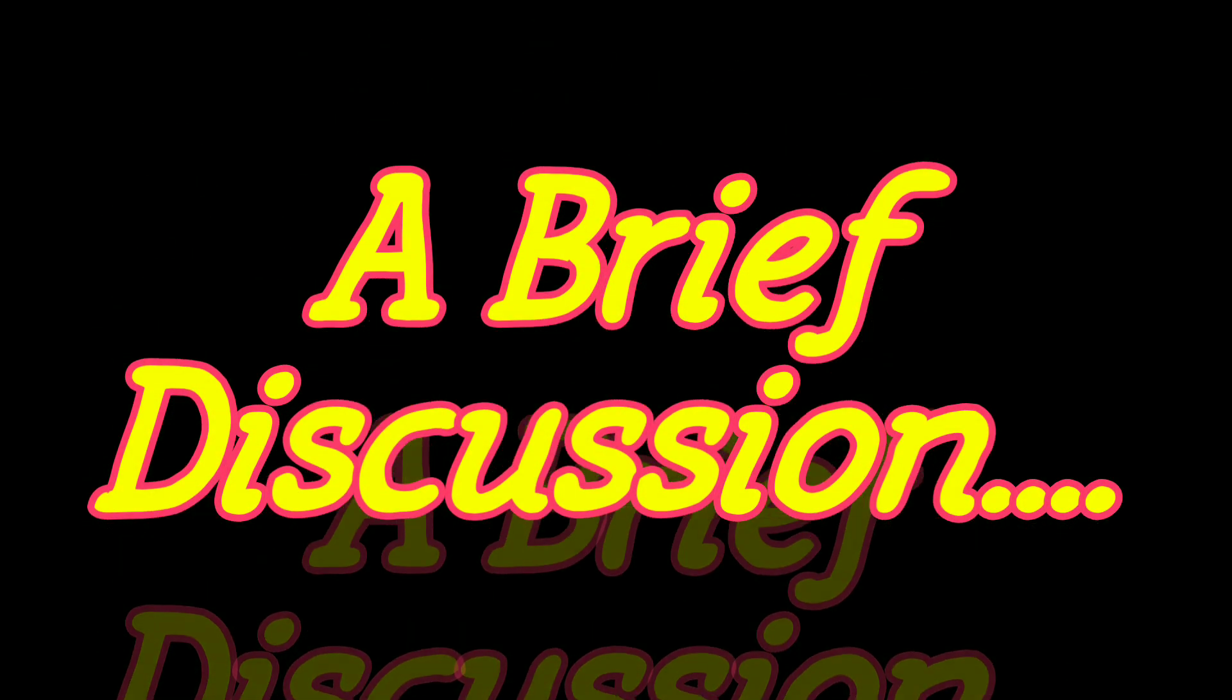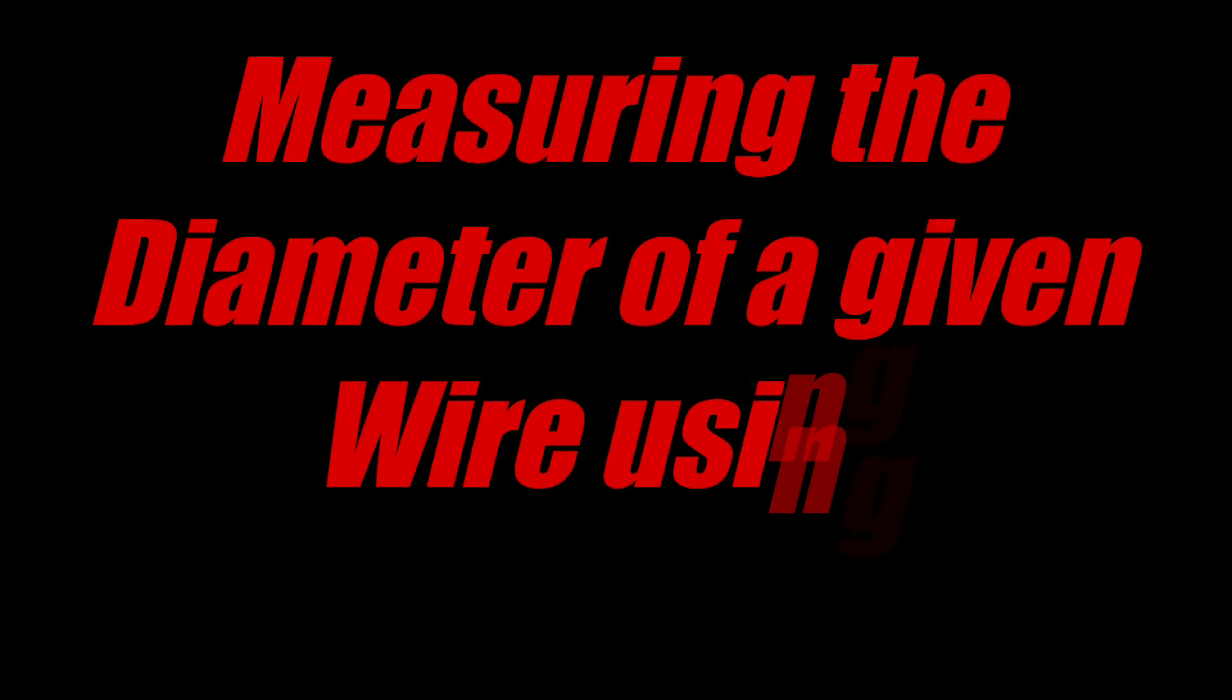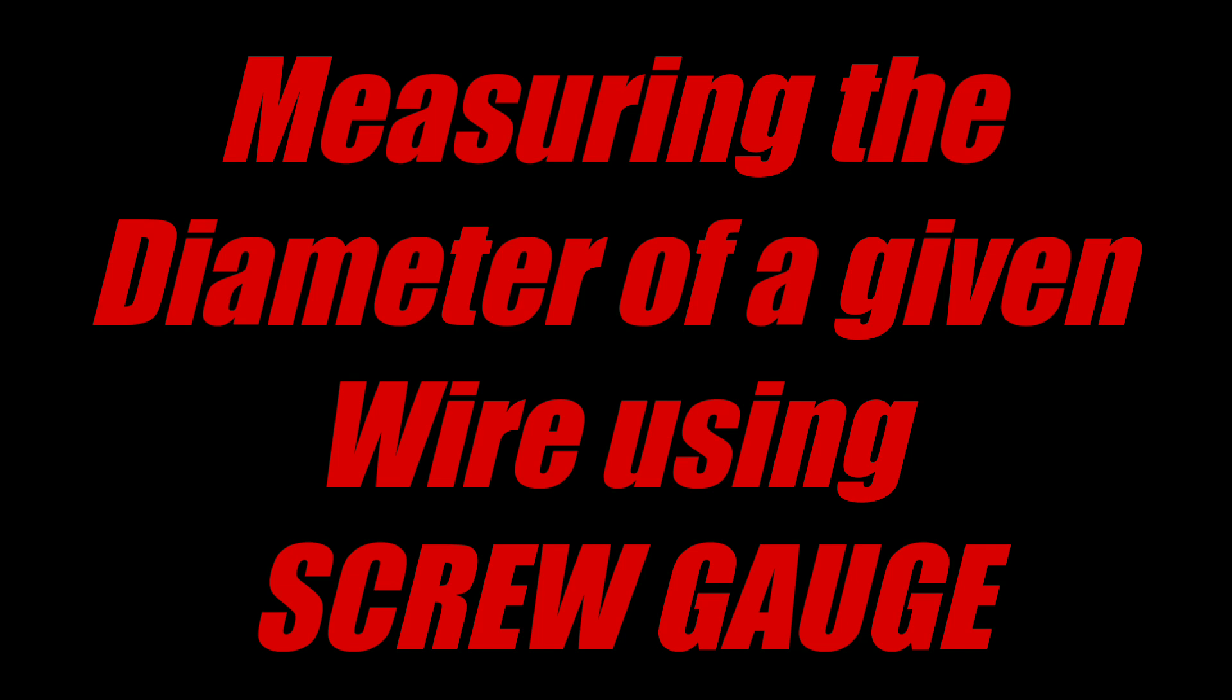Hello guys, this is the third part of the upcoming series of class 11 practicals and the questions based on it. The first two parts have already been uploaded, so watch this part carefully. In this practical we are going to measure the diameter of a given wire using a screw gauge. In the first two practicals we used vernier calipers, but now we are using a screw gauge.